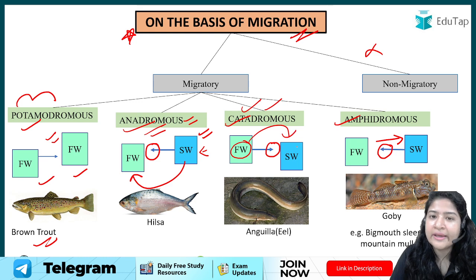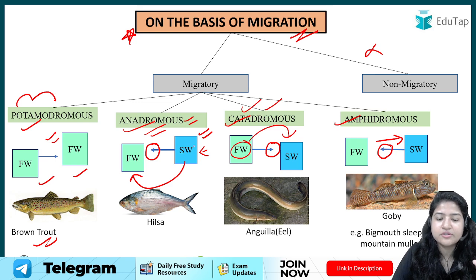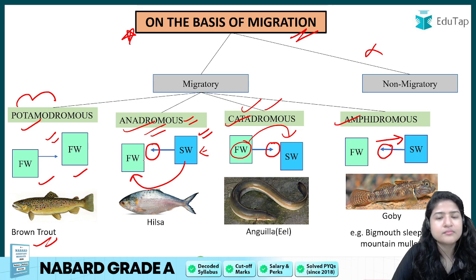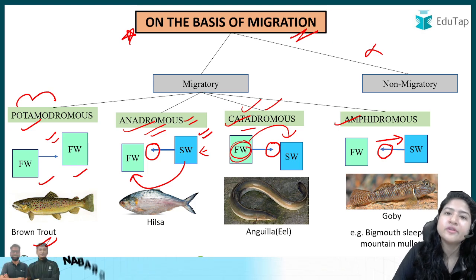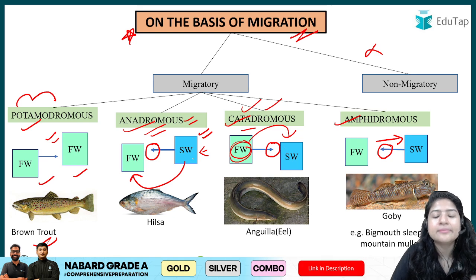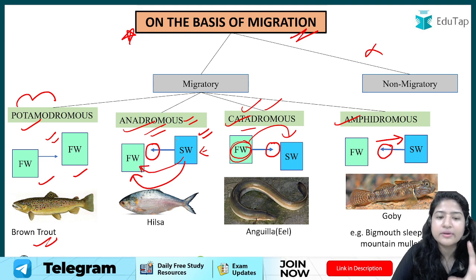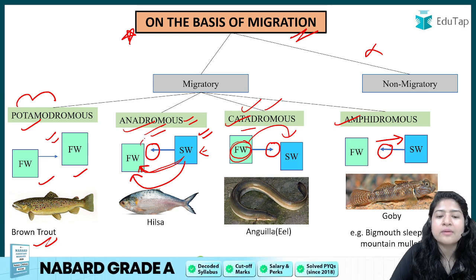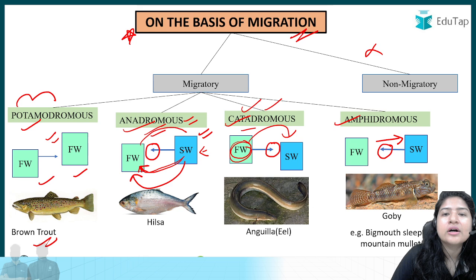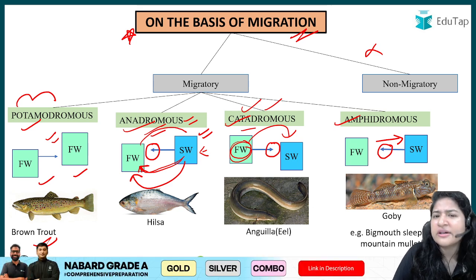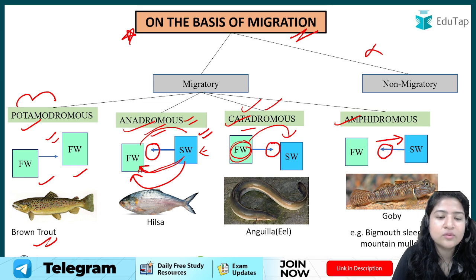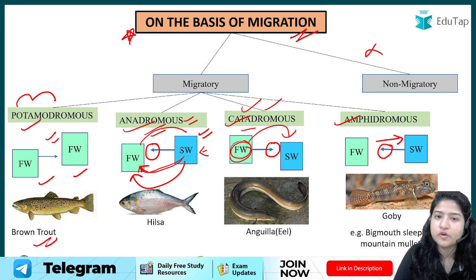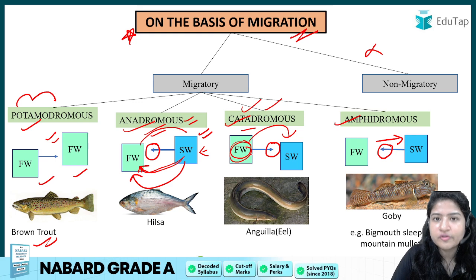Catadromous fishes are fresh water fishes that move to sea water to lay eggs. They live in fresh water, but when mature they migrate to sea water to breed and then die — because sea water fishes coming to fresh water also die after laying eggs due to salinity mismatch. The classic example of a catadromous fish is eel.